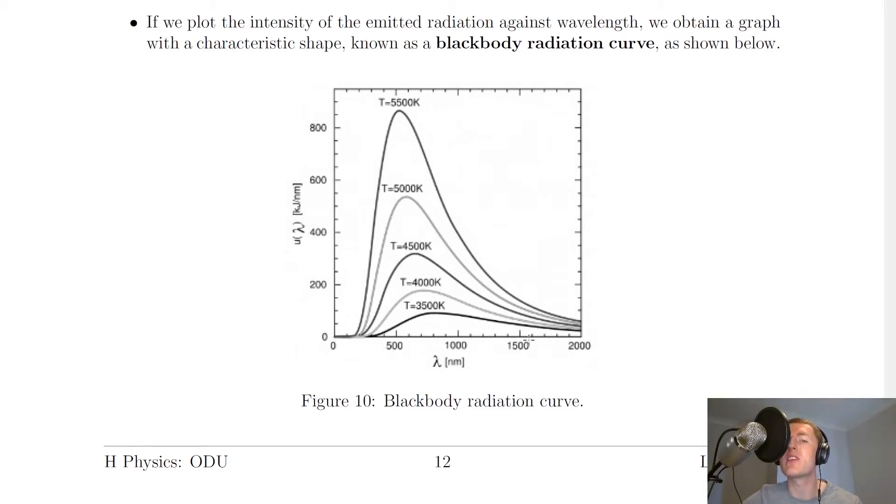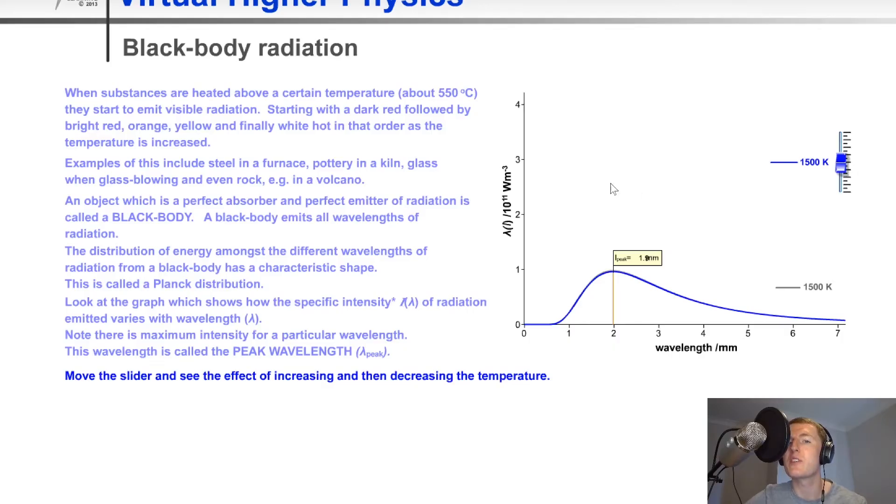Now I'm going to show you an animation to help you understand the parts of this graph. You can just ignore all this text, but if you look at the graph here on the right hand side, we're going to change the temperature and look at what the curve looks like for different temperatures. Right now we've got the blackbody radiation curve for a temperature of 1500 Kelvin. If we reduce that to say 1000 Kelvin, then your graph would look like this. Notice that the actual height of the peak has been reduced and the area under the graph has also been reduced.